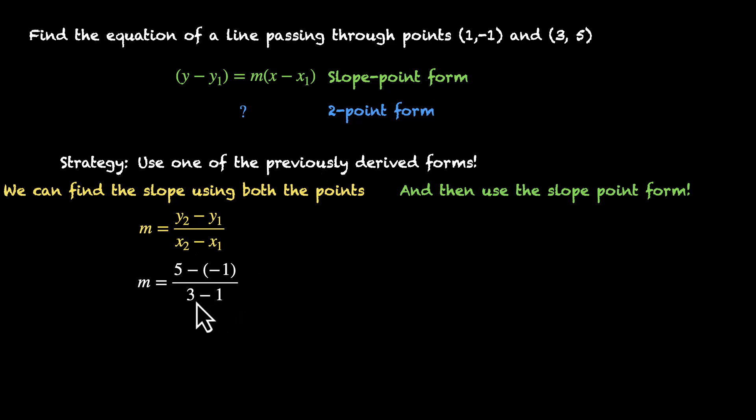So let's do that. The slope is y2-y1 by x2-x1. Plugging the points, this is what we get: 5 minus -1 by 3-1. So that's 5 plus 1, 6, by 3-1, 2. So 6 by 2 is 3. So the slope of this line is 3.